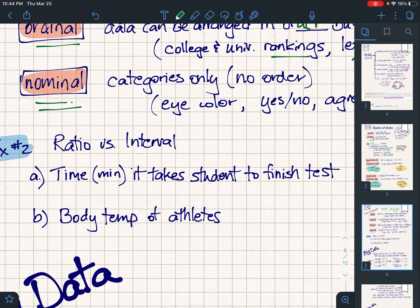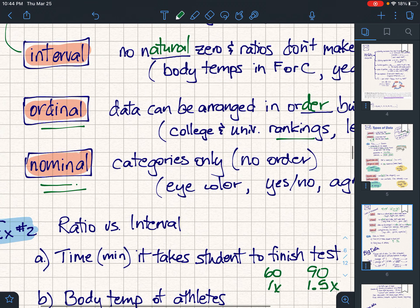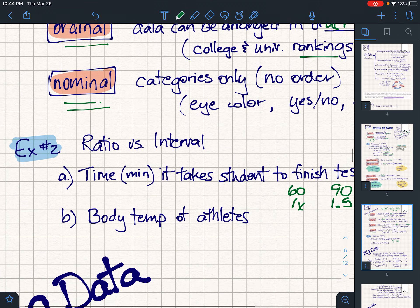Like, how long does it take you to finish a test? If somebody says it took me 60 minutes to finish a test and somebody else said it took me 90 minutes, well this we can clearly see is 1.5 times longer than this one. So this would actually be a ratio, not an interval. Body temperature would be obviously an interval because there again it's a temperature and there's no natural zero.